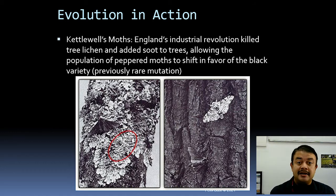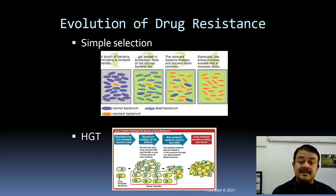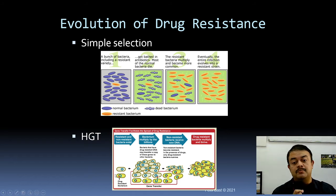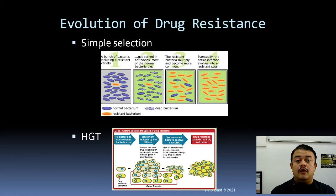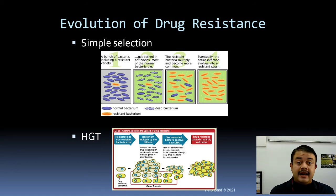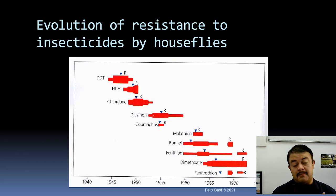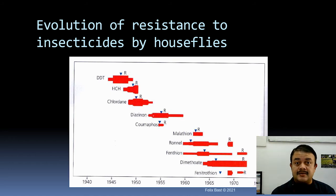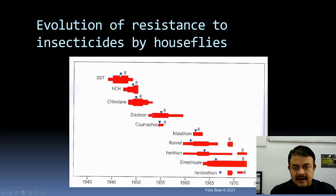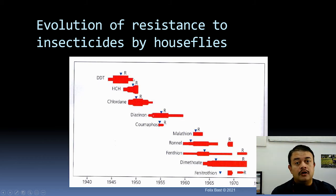The story of Kettlewell's moth, discussed when we covered natural selection, is yet another proof of evolution. Similarly, the evolution of drug resistance in bacteria — usually through horizontal gene transfer of plasmids encoding drug resistance — is proof of evolution. We can also see this in real time with SARS-CoV-2: mutations accumulate and variants like Omicron evade vaccines. Antibiotic resistance and insecticide resistance are further examples: after DDT was introduced around 1943, resistant varieties began emerging within just a few years, and DDT eventually became completely ineffective.